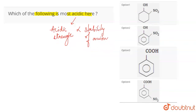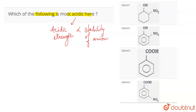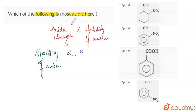It depends upon the stability of the anion that is formed, because whenever we talk about acidic strength, we talk about losing of H+. So when H+ is lost, an anion is going to get formed, and when the anion is formed, we talk about the stability of that anion. Now, the stability of the anion is proportional to the electron withdrawing group.